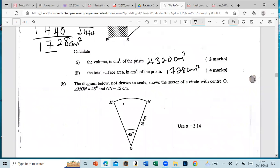The diagram below, not drawn to scale, shows the sector of a circle with center O. Angle MON, which is this angle right here, is equal to 45 degrees, and ON, which is the radius, is 15.